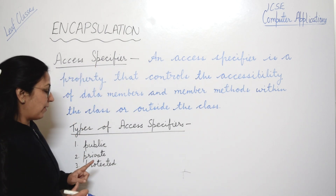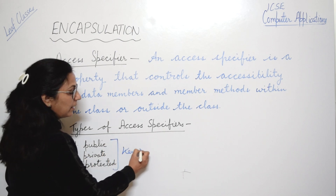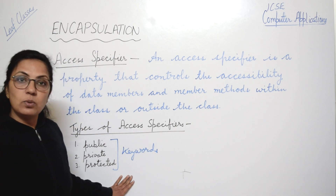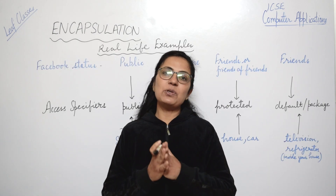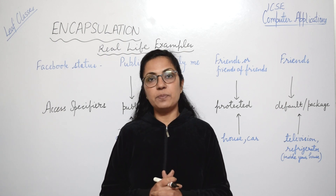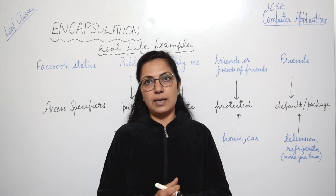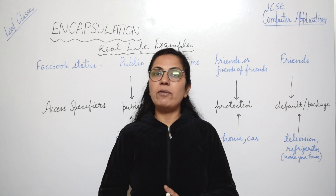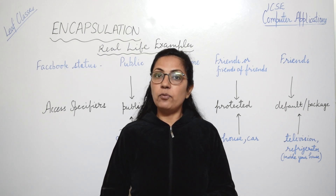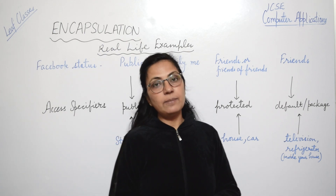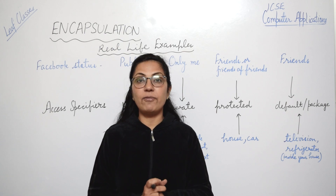In Java there are three types of access specifiers: public, private, and protected. All three are keywords — that means we cannot use these words as variable names or identifiers. Before we proceed, I want to give you some real-life examples of access specifiers so you can correlate with Java. Also note: you don't have any programming based on encapsulation in your syllabus — only in Section A, around three to four max questions can come from this topic.